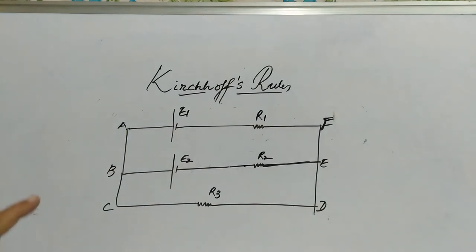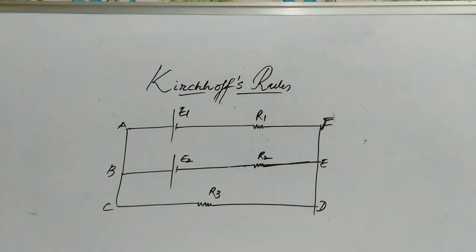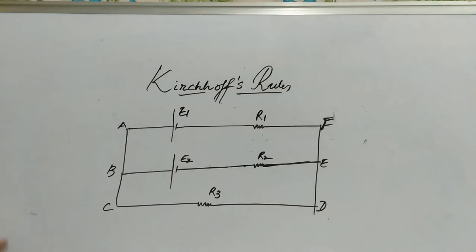Now, in the problems of Kirchhoff's Law, if the directions of the currents are given in the problem itself, it's fine. Otherwise you can imagine the current direction as you like. The only thing is, if your answer is coming in negative, that means your assumption is just opposite to the real situation.